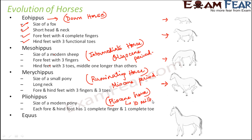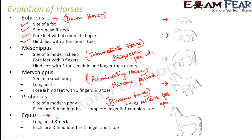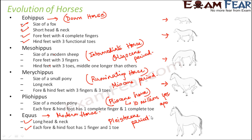The Pliocene period was almost 10 million years ago. Then came Equus, which is the modern horse we see today. It has a long head and neck, and its size is quite bigger compared to Pliohippus. Each fore and hind foot has one finger and one toe — which is why Pliohippus was called the first one-toed, one-fingered horse, as Equus also shares this trait. Equus is also known as the Pleistocene horse and has been found from the Pliocene period onwards, continuing to the present day.